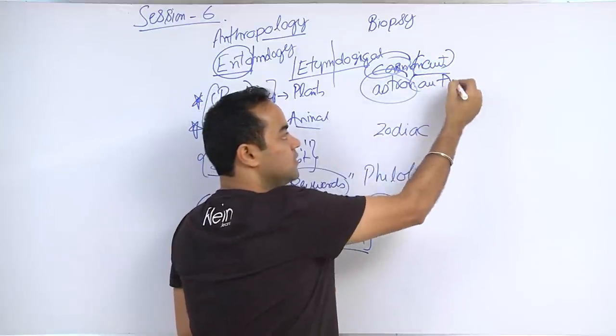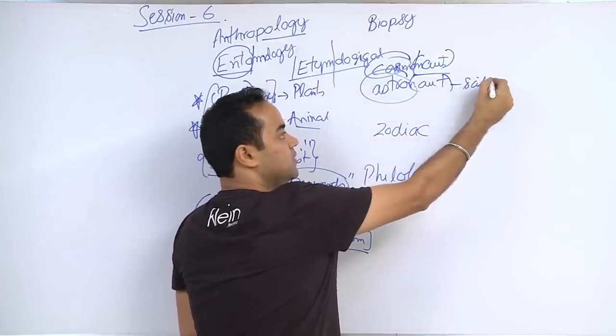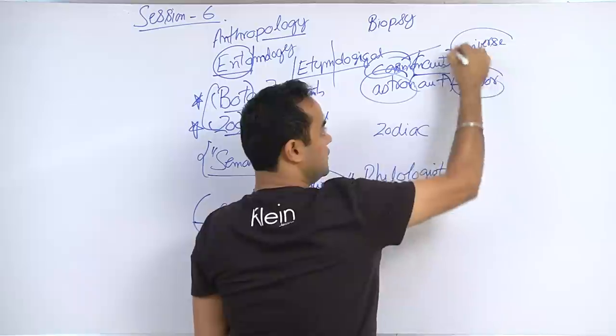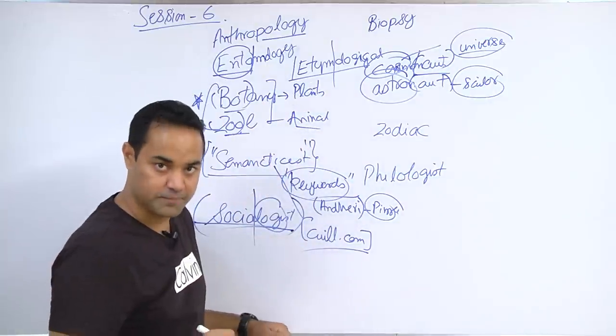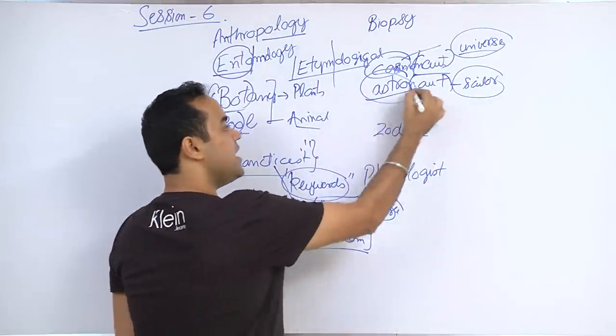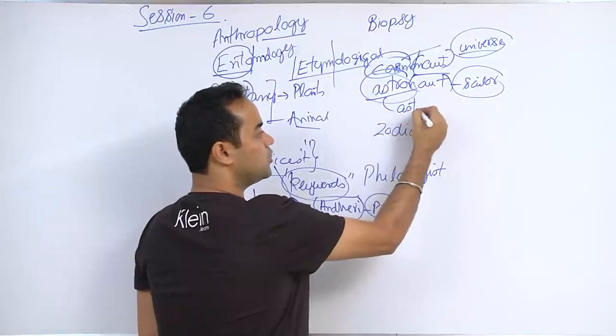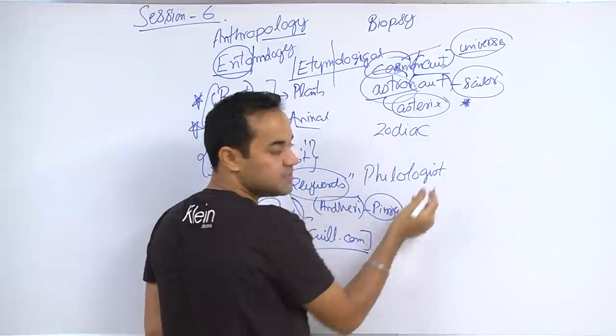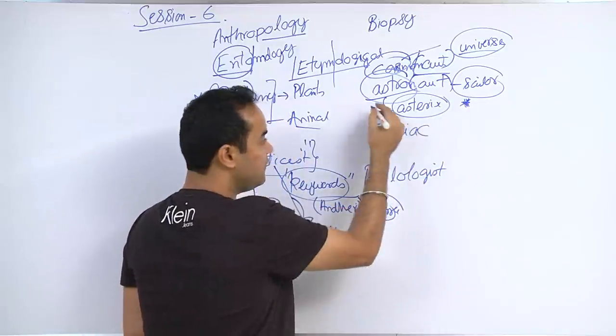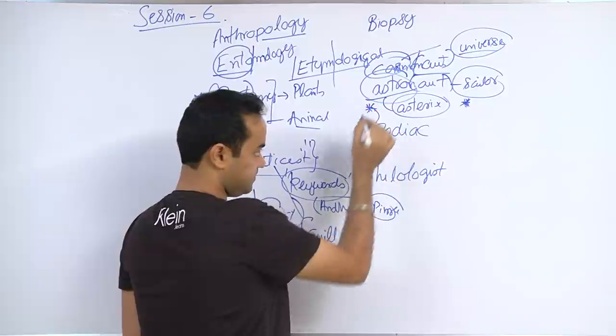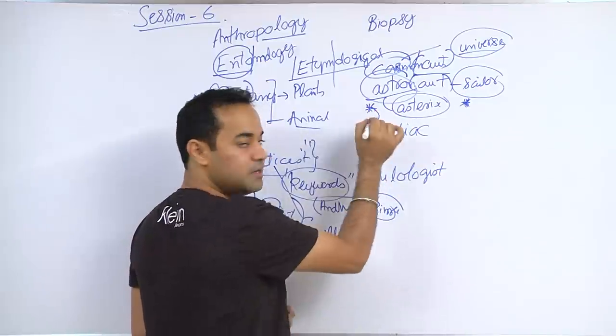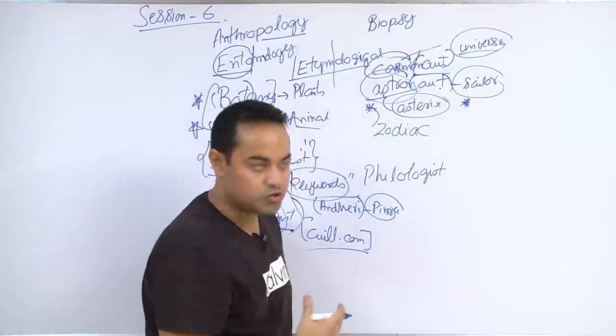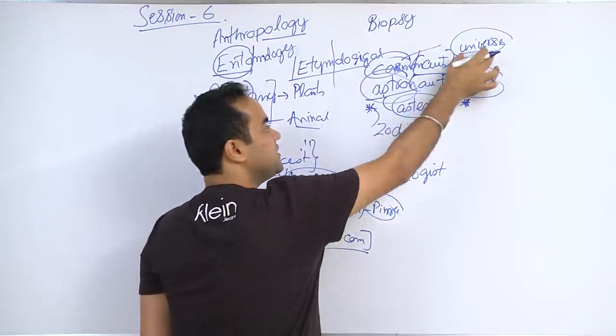You must have remembered that word cosmos for universe. Astro derived from the word asterisk. Asterisk - in your PCs there's a star like this, it's called asterisk. And also there's a flower like this, it's also called asterisk flower. The word aster means a star.